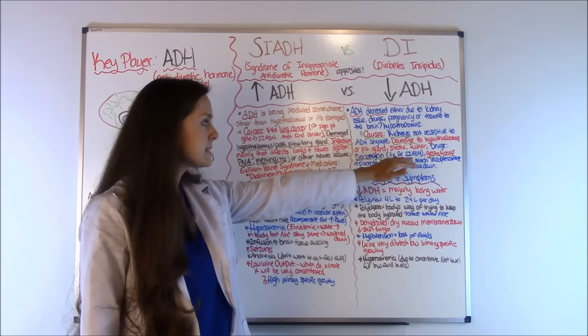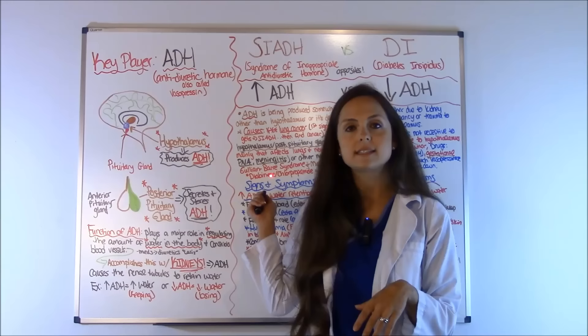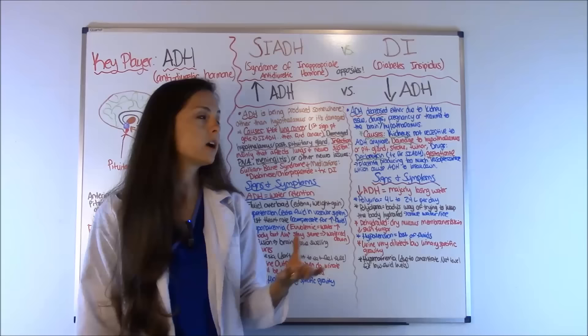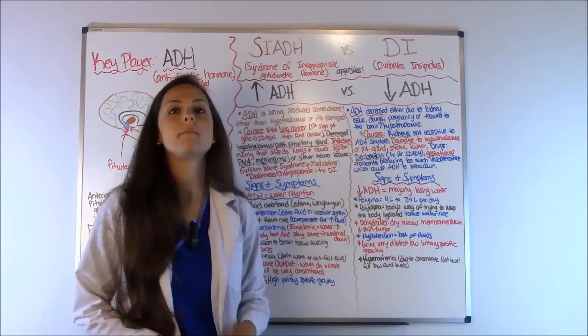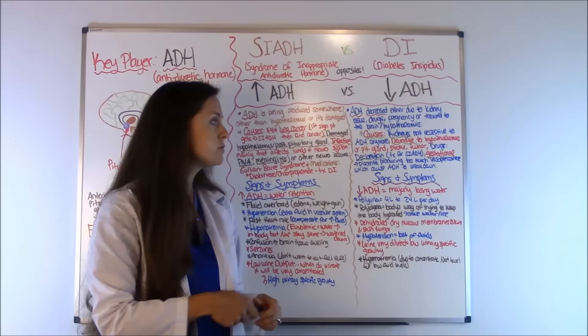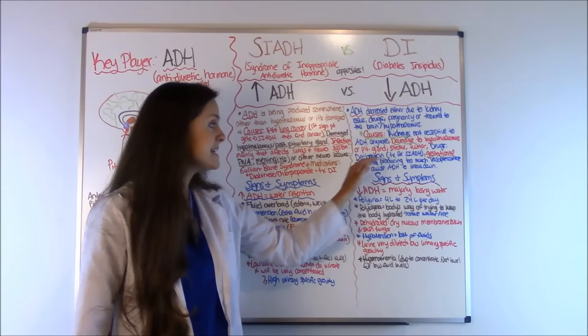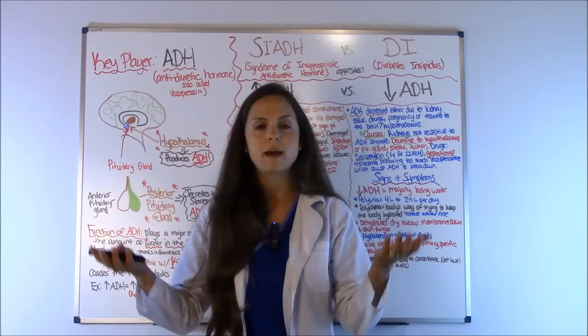A drug to remember for DI is Declomycin — this is actually a treatment for SIADH, but if taken, it causes the anti-diuretic hormone to be inhibited. It's part of the tetracycline antibiotic family and can cause diabetes insipidus as a side effect. For gestational DI, when the patient is pregnant, the placenta can produce too much vasopressinase, which causes the anti-diuretic hormone to break down — so there's no more ADH and the patient is urinating like crazy and losing lots of fluid.